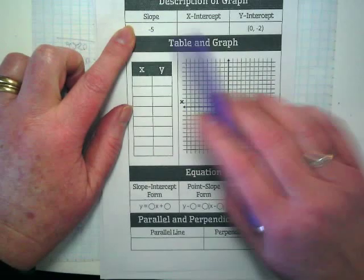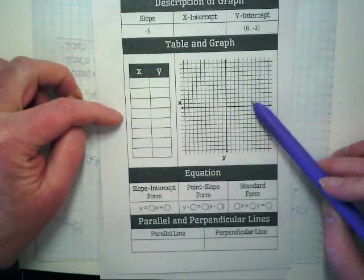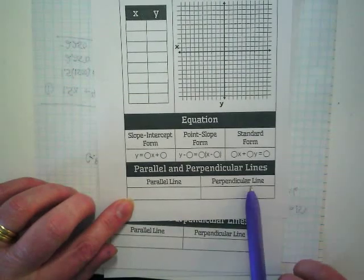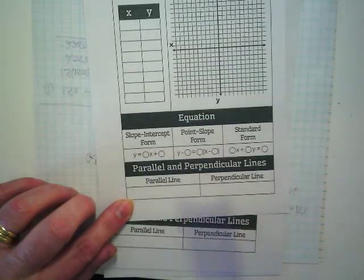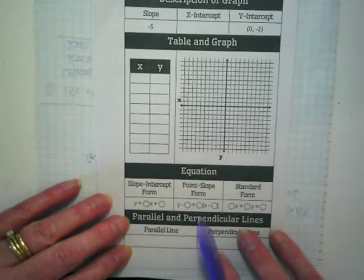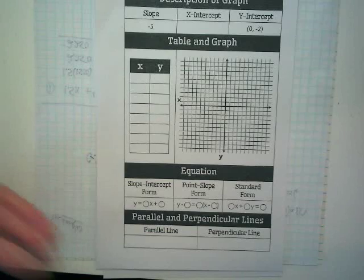We're dealing with slope, intercepts, tables, graphs, equations, and what do you see down at the bottom? Parallel and perpendicular lines. The equation part is a complete review of the whole chapter, minus word problems.